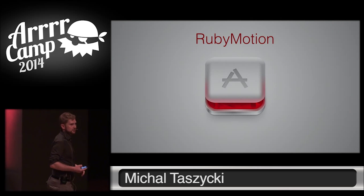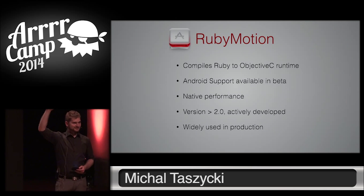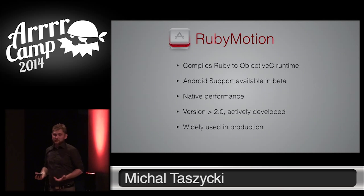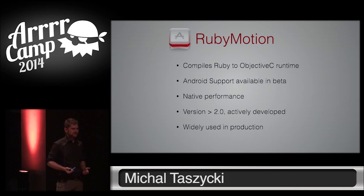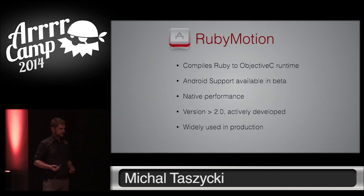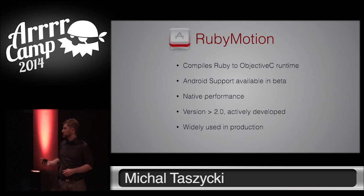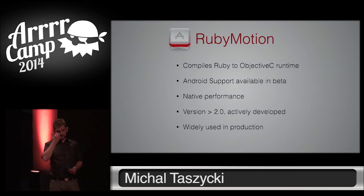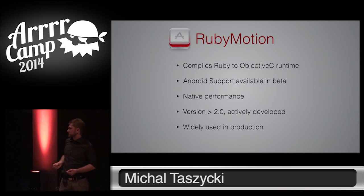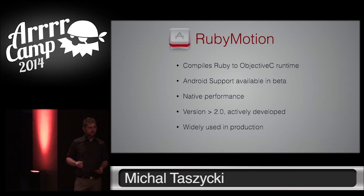Then there is RubyMotion. How many of you use RubyMotion? Nice, half of you. So, RubyMotion is a Ruby to Objective-C compiler. And from, like, two weeks ago, there is also an Android toolkit for RubyMotion. It doesn't work that great yet, but let's say in a year it will work as good as the Objective-C one. It has close to native performance because it's compiled to Objective-C runtime and basically Java compiled classes for Android. It's actively developed and quite widely used in production. There are already working applications made in RubyMotion, like 37Signals Basecamp, for example.